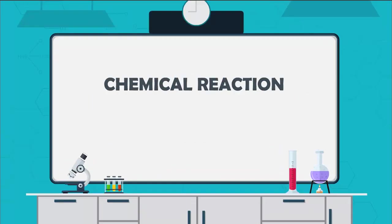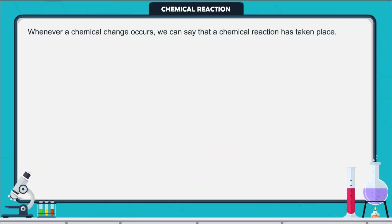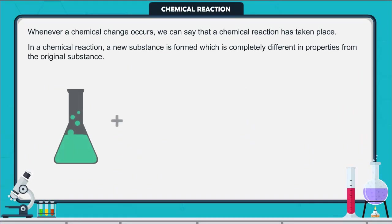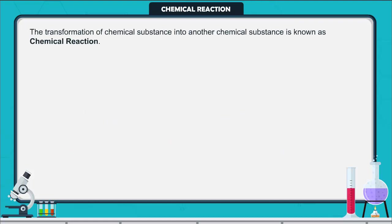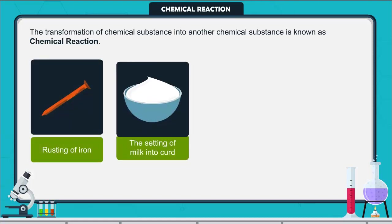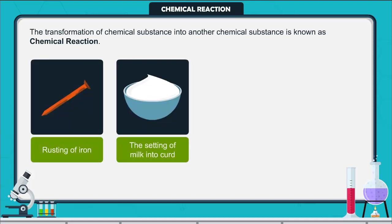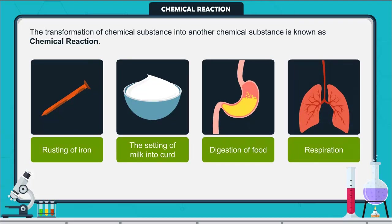Whenever a chemical change occurs, we can say that a chemical reaction has taken place. In a chemical reaction, a new substance is formed which is completely different in properties from the original substance. The transformation of a chemical substance into another chemical substance is known as a chemical reaction. For example, rusting of iron, the setting of milk into curd, digestion of food, respiration, etc.